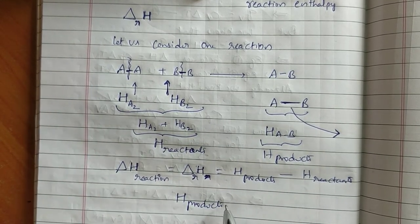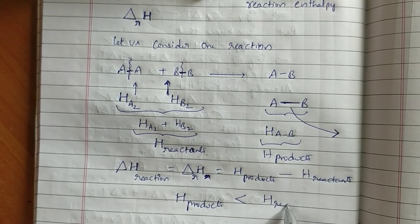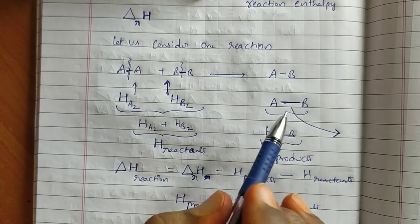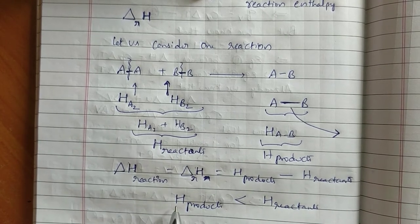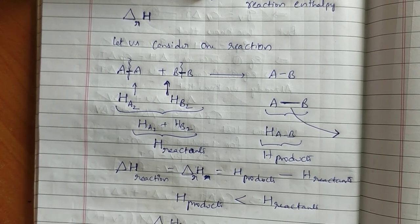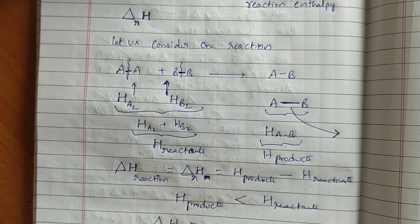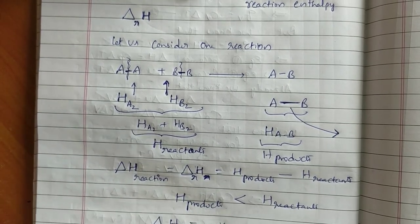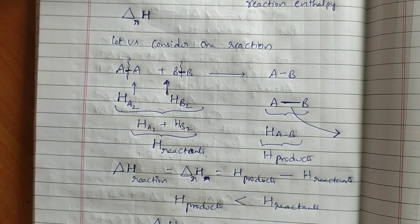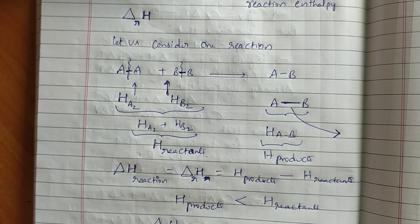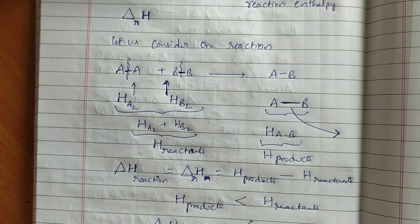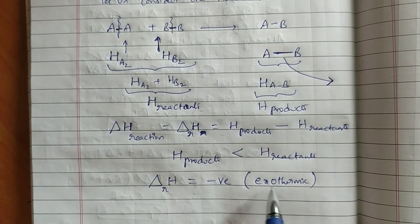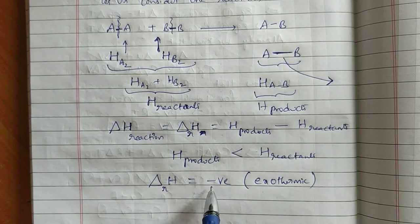When enthalpy of products is less than enthalpy of reactants, delta R H is negative. In that case, energy is released, so that is called an exothermic reaction. In the case of an exothermic reaction, delta H is equal to negative. The negative sign represents energy is released; positive represents energy is absorbed.